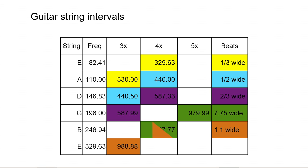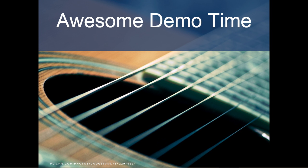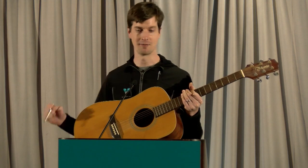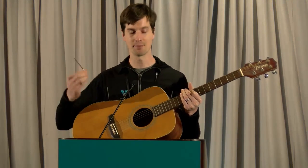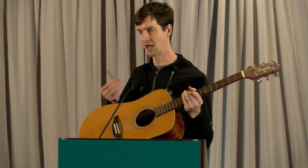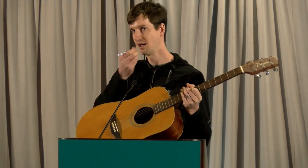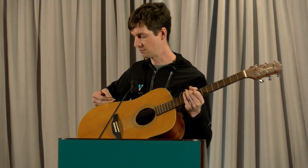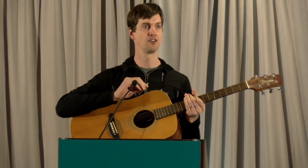We're going to listen to some of those overtones and see if we can tune a guitar. I'm going to pull out my tuning fork — I'm not going to use an app. I'm going to listen to this tuning fork, which rings at 440 cycles per second, and then also listen to the overtones in the A string on this guitar and hear the beats.